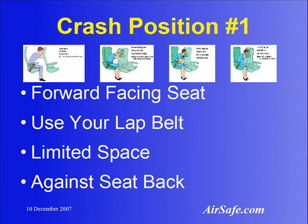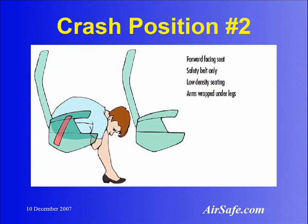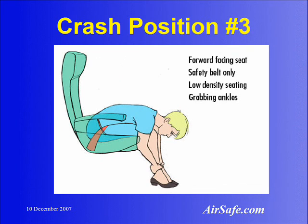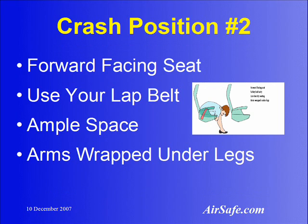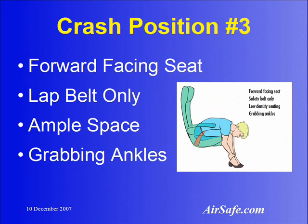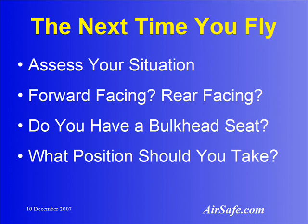If you have sufficient space where you can put your head between your knees without hitting the seat in front of you, there are two other positions you can use. In crash position number two, you would put your head between your knees and wrap your arms under your legs behind your knees. A variation on this is crash position number three, where you would also put your head between your knees but grab your ankles. While typically you only have enough room to do this in seating such as business or first class, depending on the size of your body, you may have sufficient room in coach as well. The next time you take a flight, assess your situation depending on where you're sitting, to determine whether you should use the first, second, or third kind of crash position.